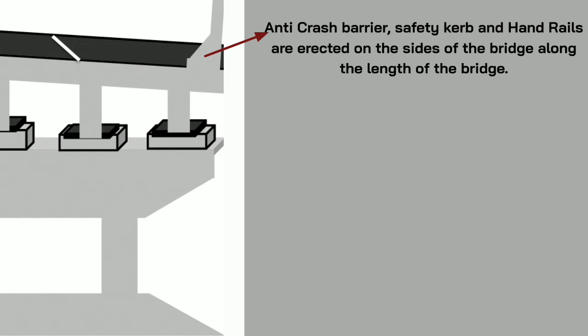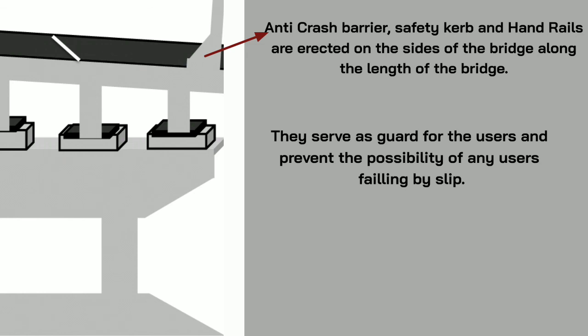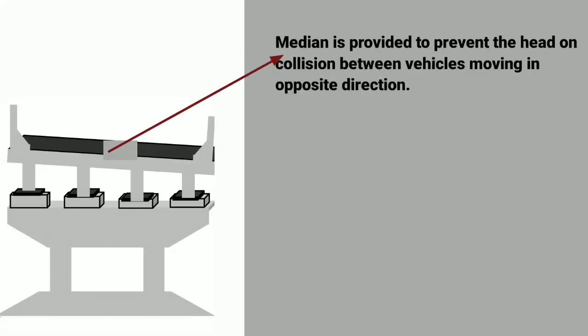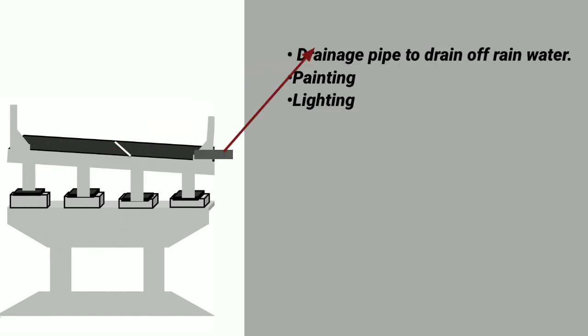Anti-crash barriers, safety curbs, and handrails are erected on the sides of the bridge along its length. They serve as a guard for users and prevent the possibility of any user falling off. A median is provided to prevent head-on collision between vehicles moving in opposite directions. A drain pipe is provided to drain off rain water, and painting and lighting are also included.